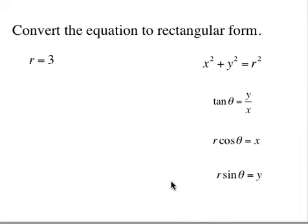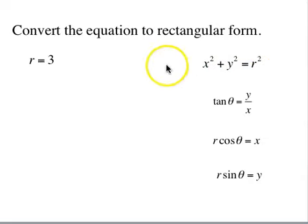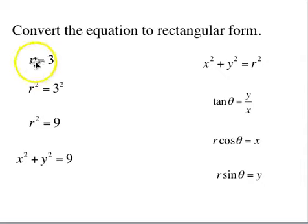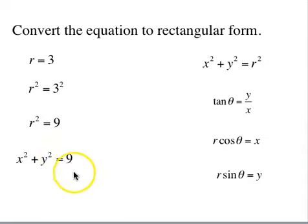The first example is r=3. If r=3, then r²=9. Since r²=x²+y², we replace r² with x²+y² and get x²+y²=9 — a circle of radius 3 centered at the origin, as expected.